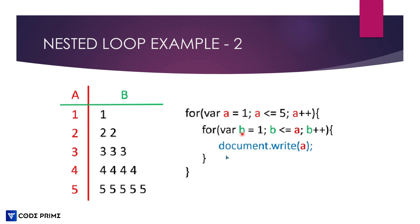It's the same structure as the previous loop example — we just need to change document.write to print variable 'a' instead of 'b'. That means 'a' will implement this serial — 1 1, 2 2, 3 3 — printing the same value for each row iteration. The three-row column prints three digits, four prints four of the same digit, and five rows prints five of the same digit.